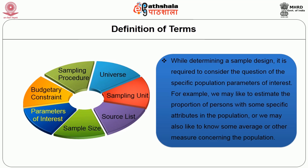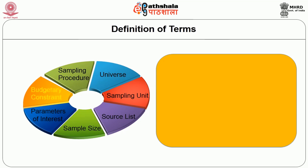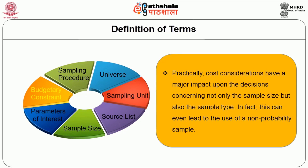Parameters of interest: while determining a sample design, it is required to consider the questions of the specific population parameters of interest. For example, we may like to estimate the proportion of persons with some specific attributes in the population, or we may like to know some average or other measure concerning the population. Budgetary constraints: cost considerations have a major impact upon decisions concerning not only the sample size but also the sample type, and can even lead to the use of a non-probability sample.